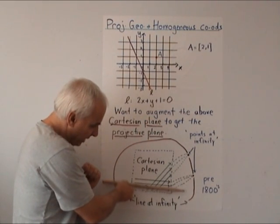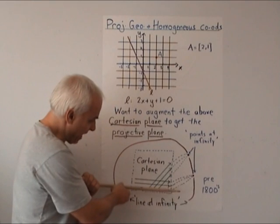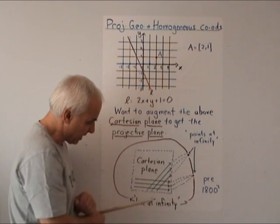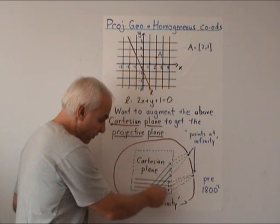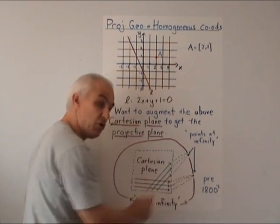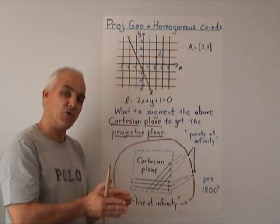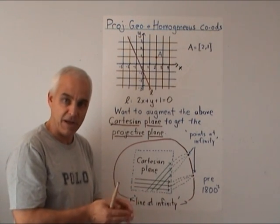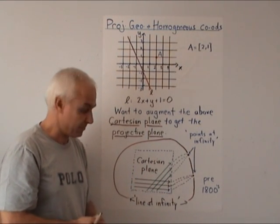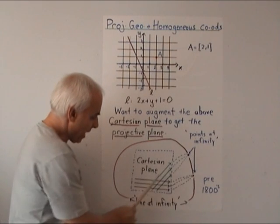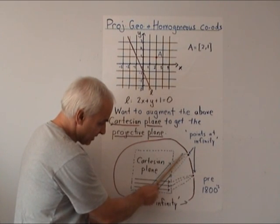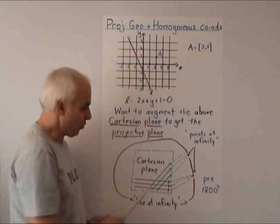How we do that is we take parallel lines—a family of parallel lines, say those ones there—and we agree that all of those parallel lines meet at a new point at infinity. That will ensure that any two lines, even if they're parallel, meet at a new point.